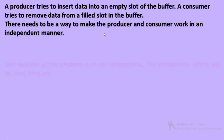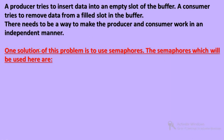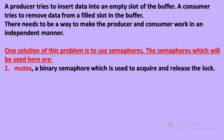One solution to this problem is to use semaphores. The first semaphore used is mutex — mutual exclusion. Only one process can enter at a time, that's why we call it mutual exclusion, or mutex. Mutex acts as a binary semaphore, which is used to acquire and release the lock — to enter and exit the critical section.